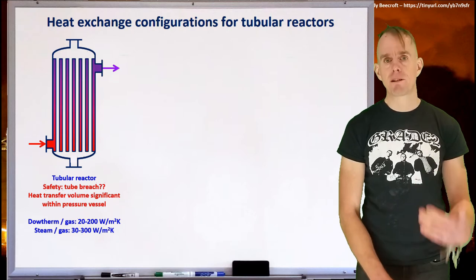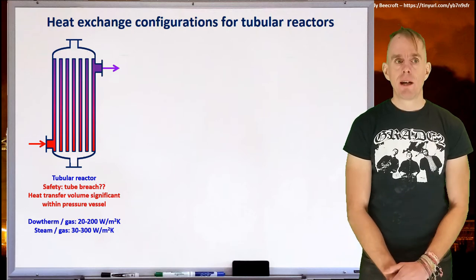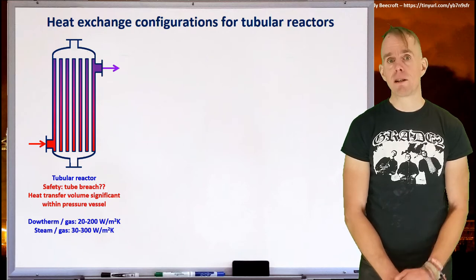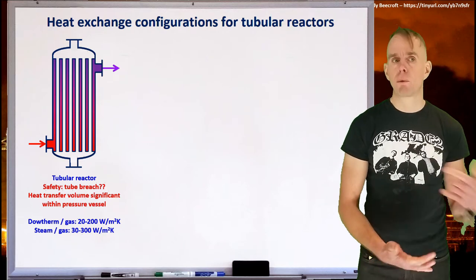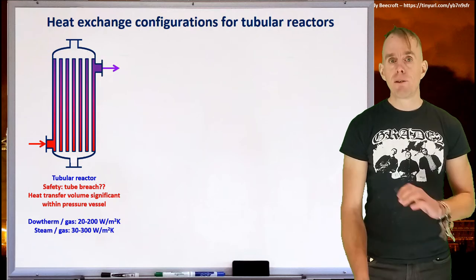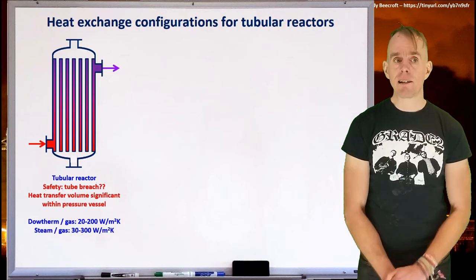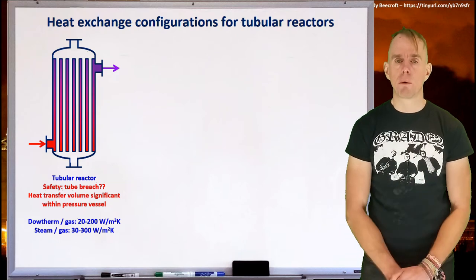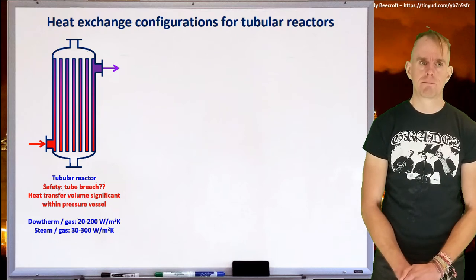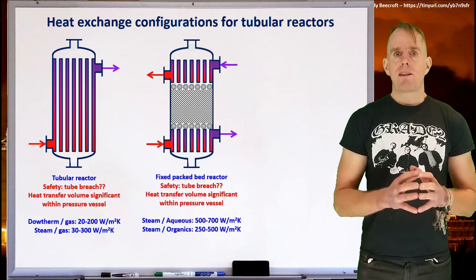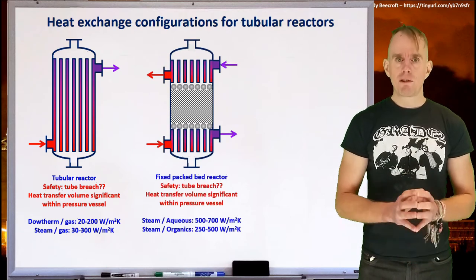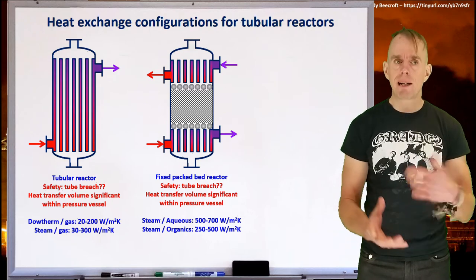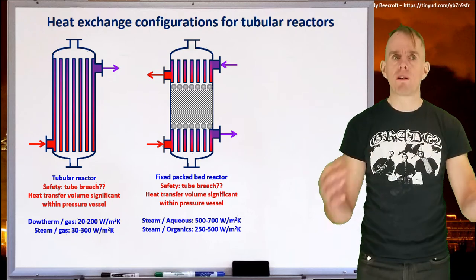So if we're thinking about the heat transfer coefficients that can be achieved, if you're using Dowtherm heating a gas, then you might achieve somewhere in the window of 20 to 200 watts per square meter Kelvin. If you're using steam heating a gas, it's kind of similar, somewhere in the window of 30 to 300 watts per square meter Kelvin. If you think back to the ammonia example, we saw that what we had was an integrated system where we had packed beds and tube bundles all in the same pressure vessel.